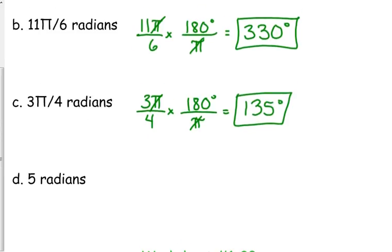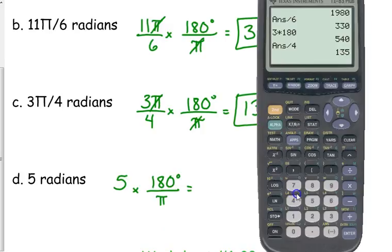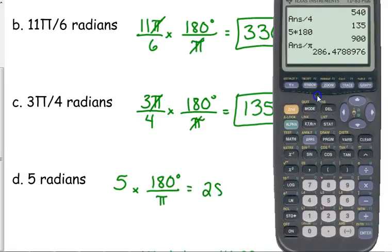Now, every once in a while you're given a radian measure that doesn't have pi in it. So just 5 radians. So in this case, this is the one exception to where the pi's don't cancel because I didn't have one to begin with. So then I have to multiply this out, and I am going to go ahead and divide by pi. It's not going to give me a nice whole number. But not everything in the real world are nice whole numbers. So that's about 286.5 degrees.